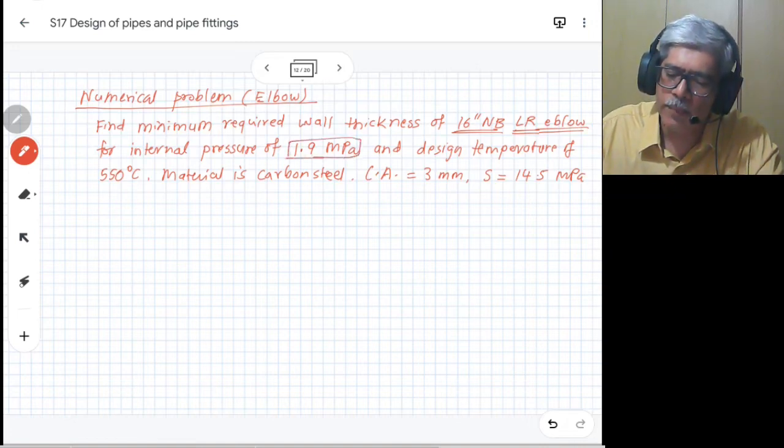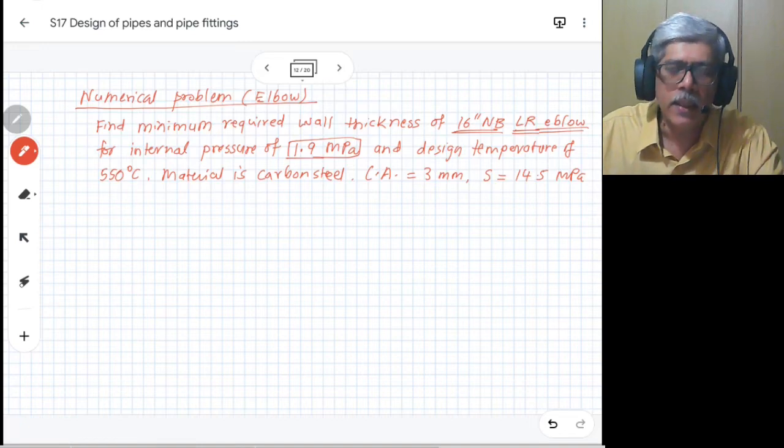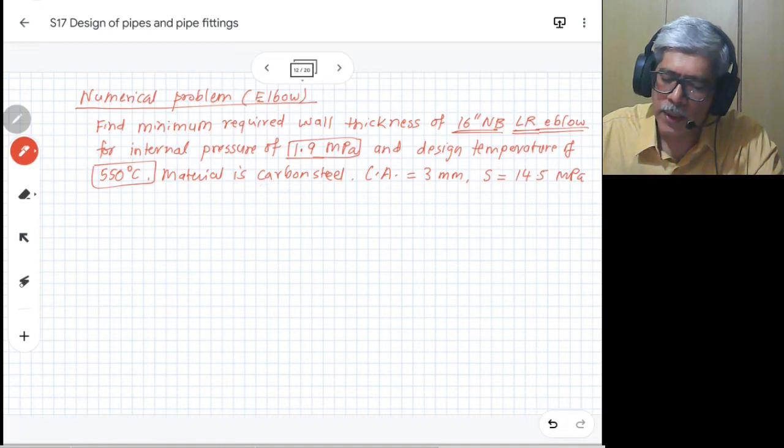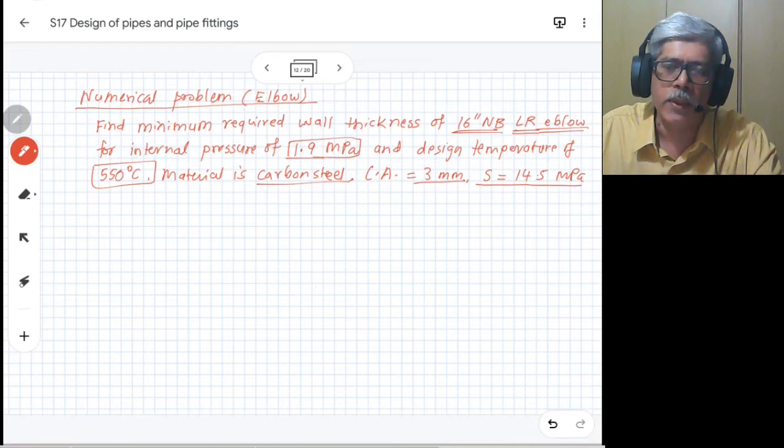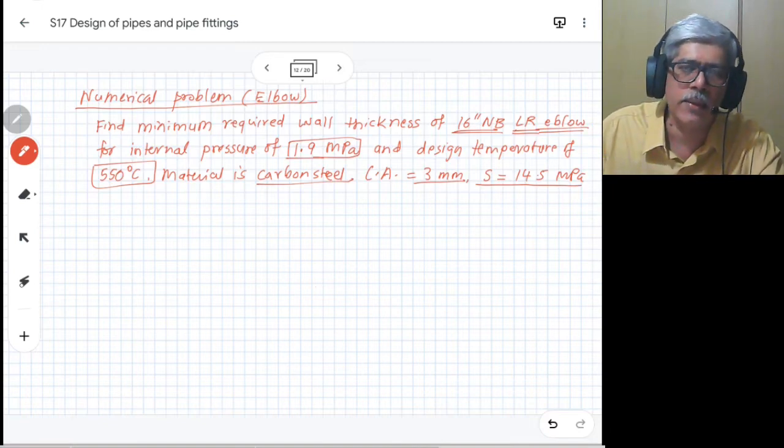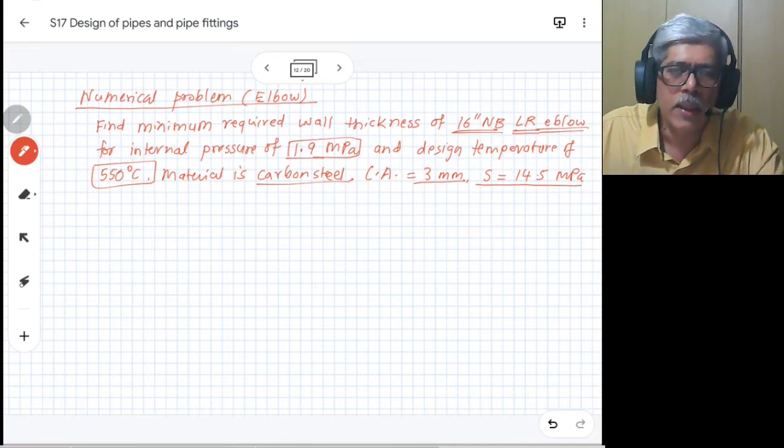For internal pressure of 1.9 MPa and design temperature of 550 degrees centigrade. The material is carbon steel, corrosion allowance is 3 mm, and allowable stress is given as 14.5 MPa. Almost all data except for the design pressure is same as that for the straight pipe which we calculated just a few moments back.